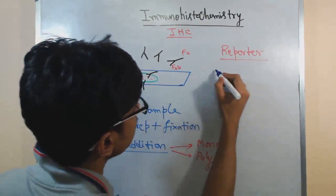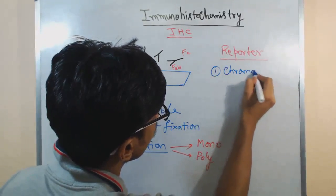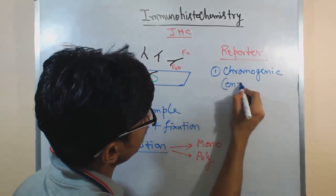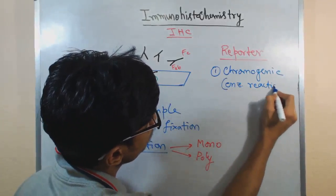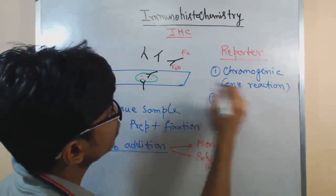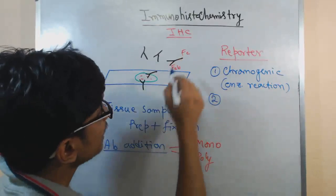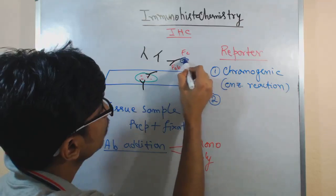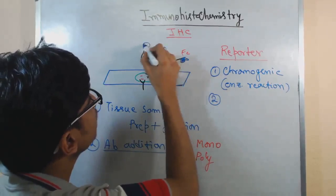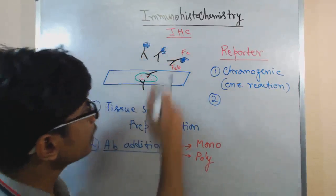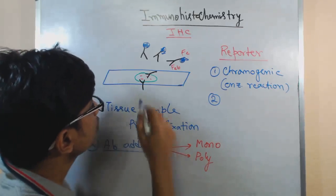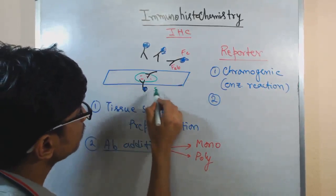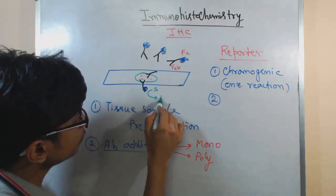The reporter can be, for example, a chromogenic substance which will provide some coloration, due to an enzymatic reaction. What we can do is take this antibody and modify it — we attach an enzyme to the FC portion of the antibody. We modify all of them by adding an enzyme to the FC portion. Then we apply this antibody, and if the antibody is bound, it is also attached with this enzyme.